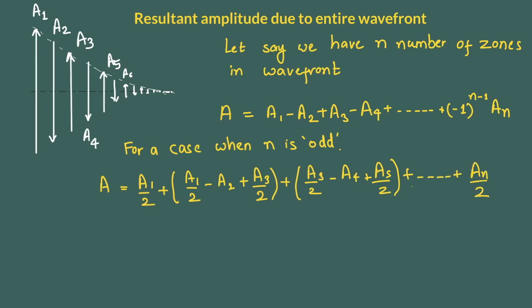Now let us discuss the term inside the bracket. As the number of zones are increasing amplitude is also decreasing. So a2 is smaller than a1, a3 is smaller than a2. But this change is really very gradual and does not happen very rapidly.